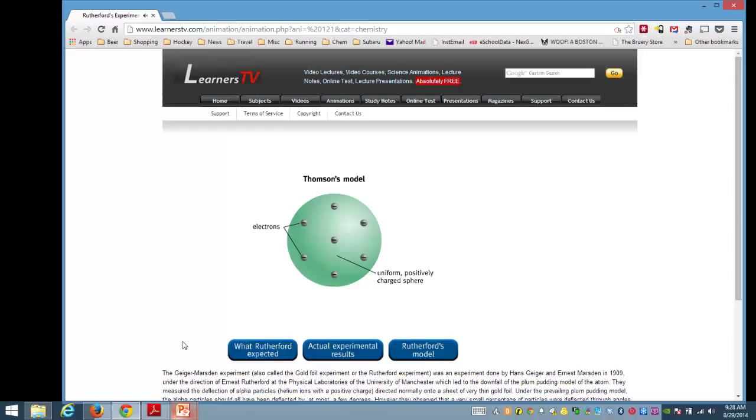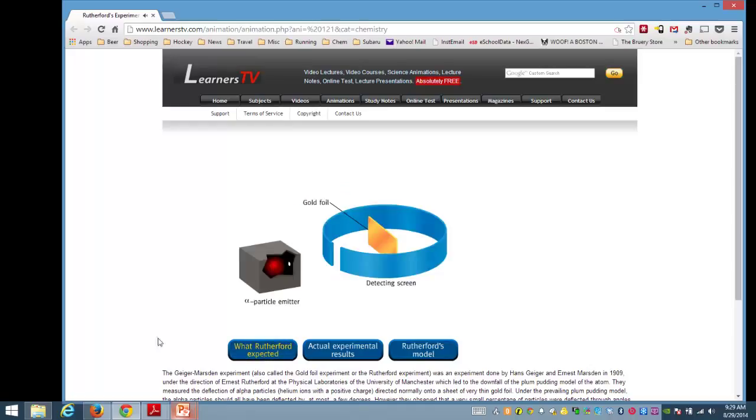In 1910, Ernest Rutherford, Hans Geiger, and Ernest Marsden carried out experiments in which very thin foils of metal were used as targets for alpha particles emitted from a radioactive source. Click on what Rutherford expected to observe. Based on Thomson's model, Rutherford expected that the positively charged alpha particles should pass through the uniform sphere of positively charged matter with little or no deflection.